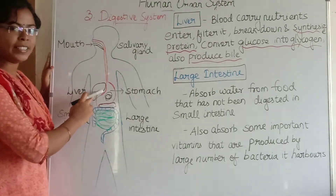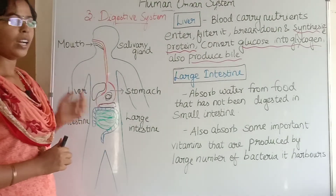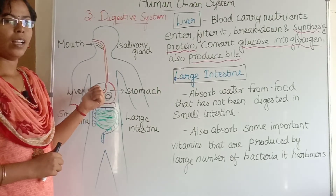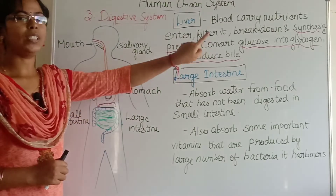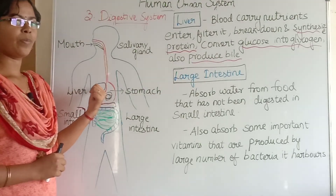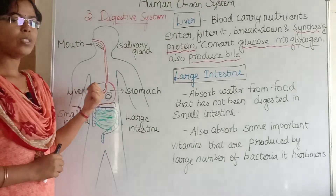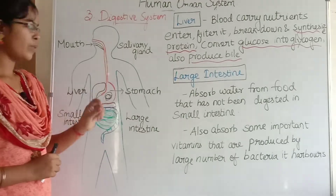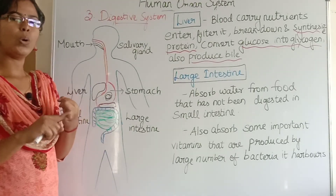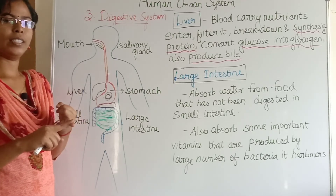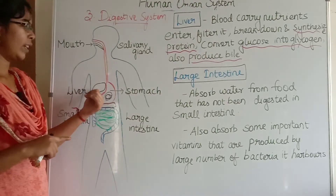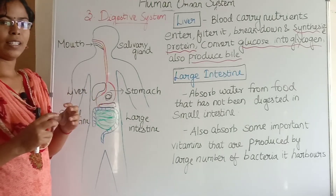The nutrients enter the liver, where they get filtered and proteins are synthesized. The liver also converts glucose to glycogen, and bile juice is produced in the liver.